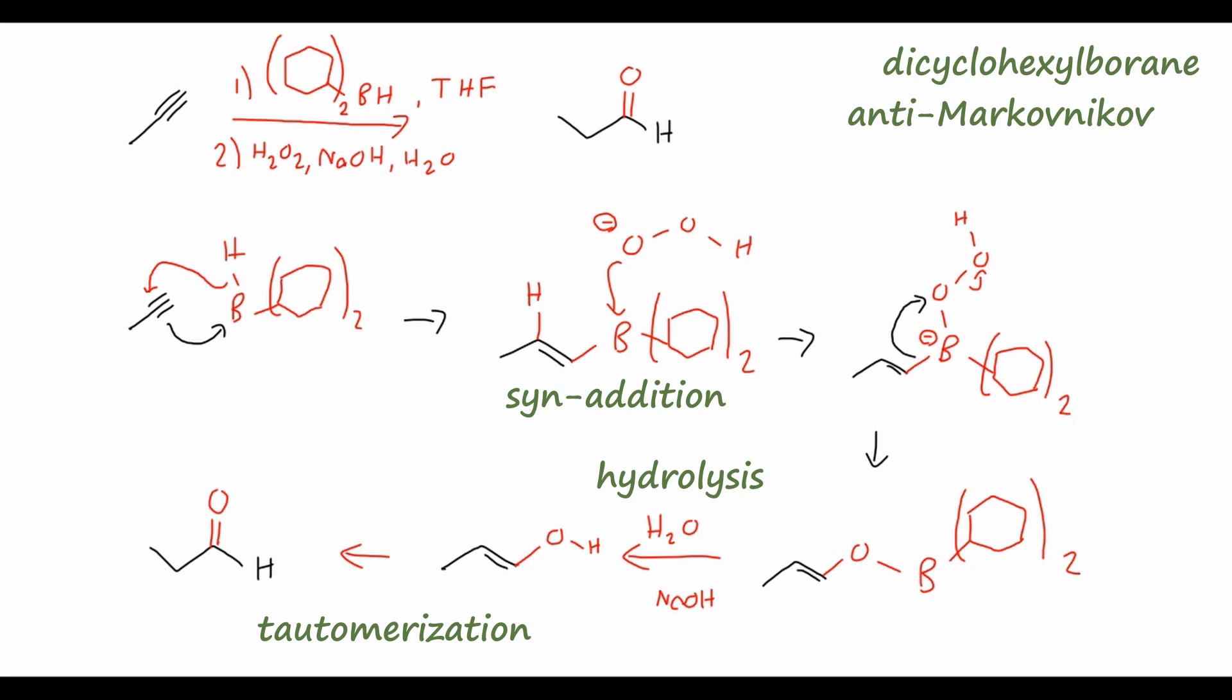Before finishing this video, I'd like to do a very simple retrosynthesis problem with the reactions we've just looked at. This is going to be the synthesis of this secondary alcohol from this 4-carbon alkyne. We can see that the alcohol in the final product has 5 carbons, whereas the starting material only has 4. A very good way we know to add carbons, of course, is through the Grignard reaction.